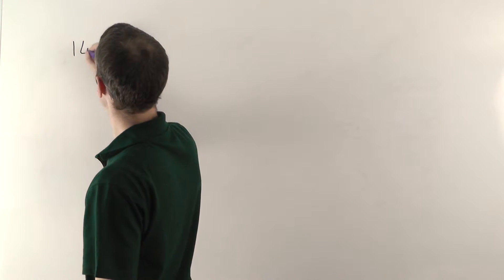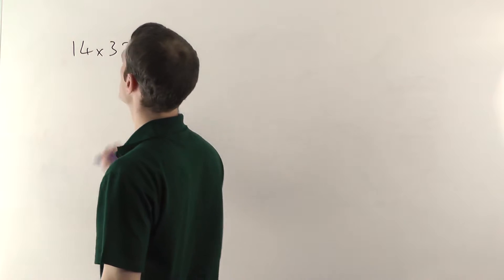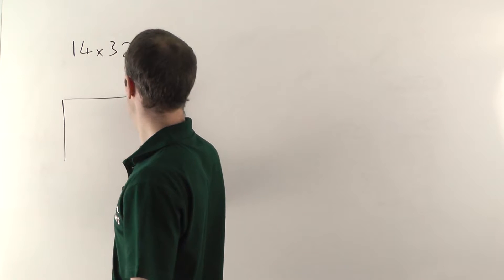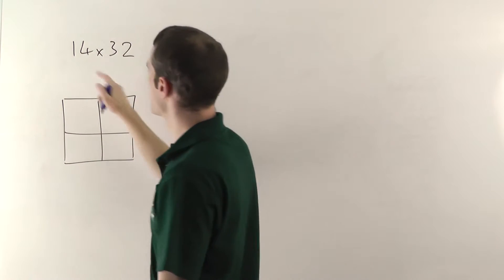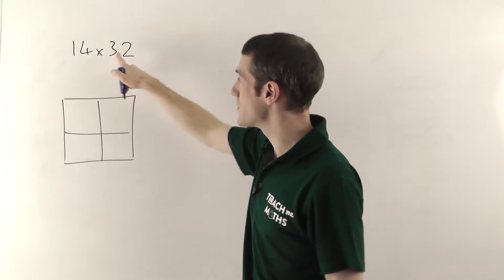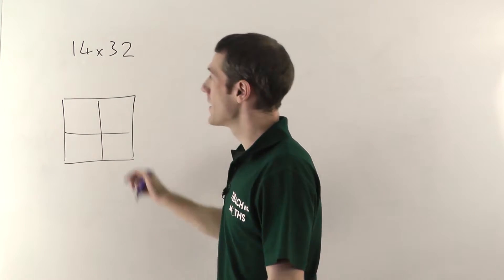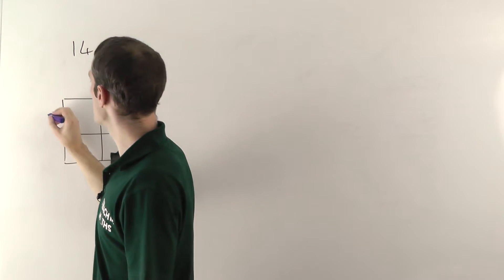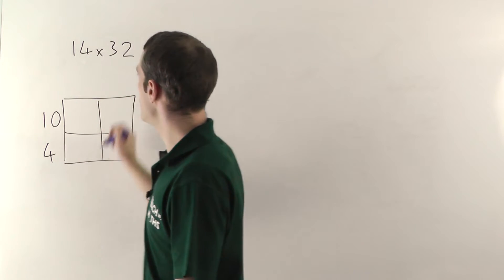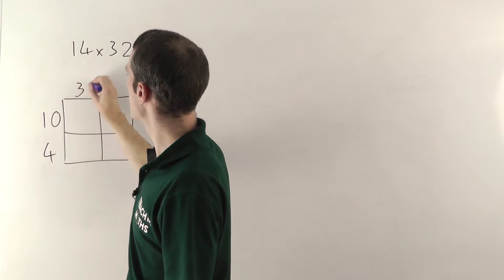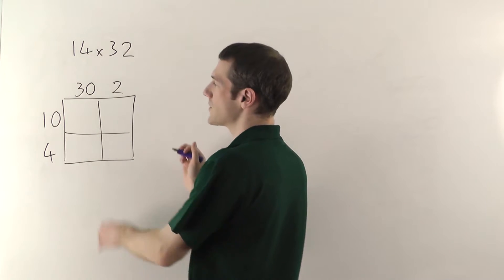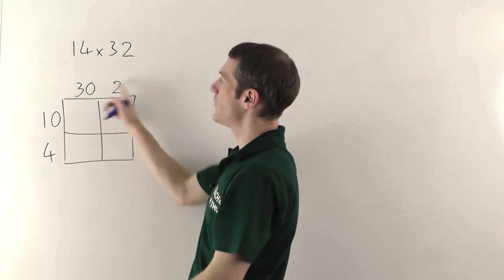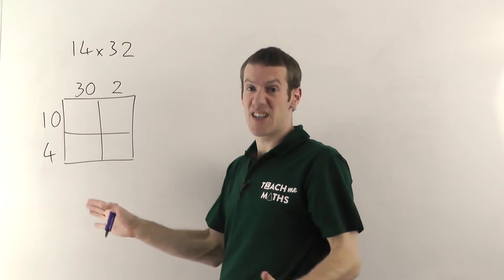So we'll start with 14 times 32. It's the grid method so you lay it out in a grid like so. Because it's a two-digit number times a two-digit number, you need a two by two grid. You then split the numbers up and write them down the side and along the top like so. So 14 becomes 10 and 4, and 32 becomes 30 and 2. You always split them up into the tens and the units. It doesn't matter which way around you write them — you could put the 14 here and the 32 down the side and you still get the same answer.